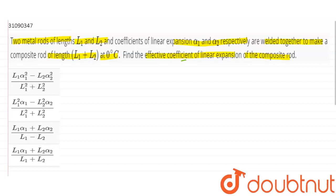For length 1, rod 1, that is delta L1. This is alpha 1, L1, delta t. Similarly, we will write delta L2. This is alpha 2, L2, delta t.